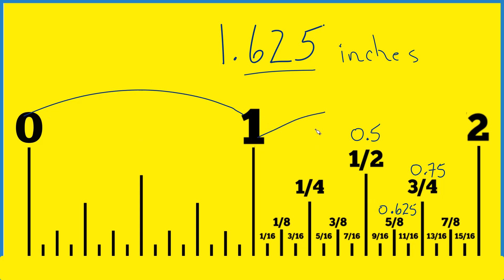We go one inch, and then that 0.625, that's right here, to the five-eighths. So if you're trying to find 1.625 inches on your ruler or your tape measure, it's one and five-eighths inch.